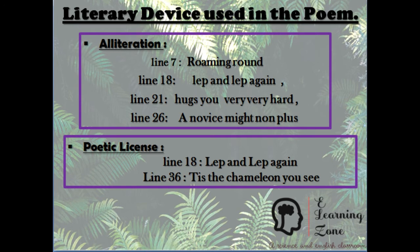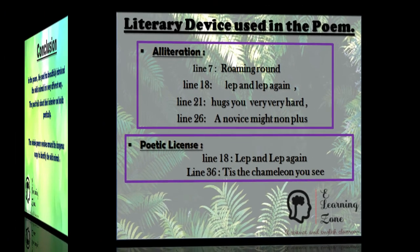Another poetic device used here is poetic license. The poet has used some words which do not have proper spelling, to make the poem sound more interesting — for example, 'lept and lept again' instead of 'leapt,' and in the sixth stanza the last line uses 'the Chameleon you see' where poetic license is applied.